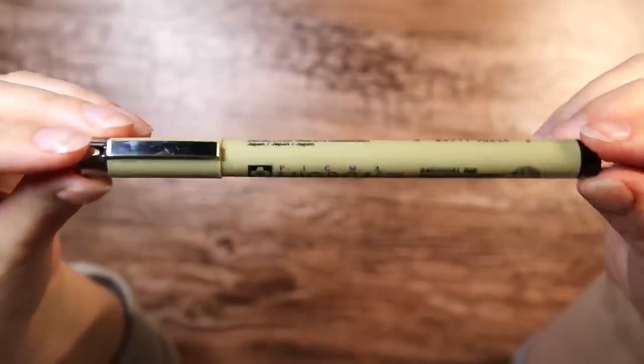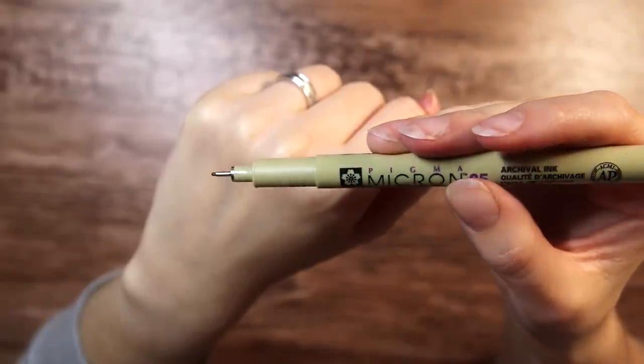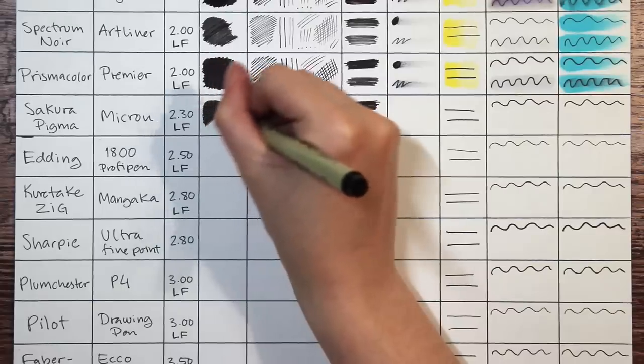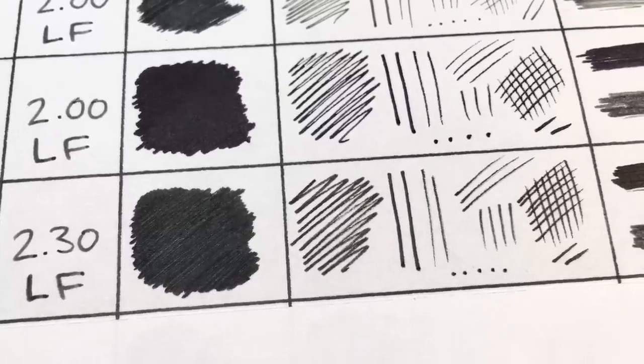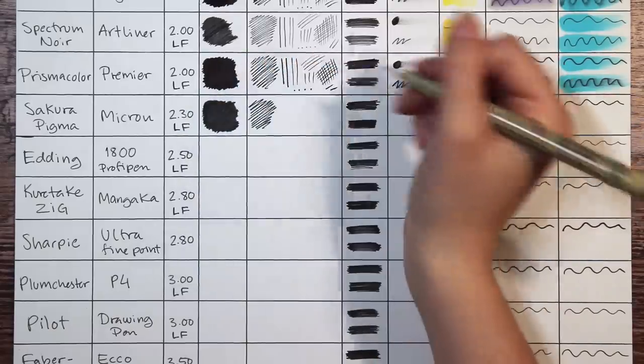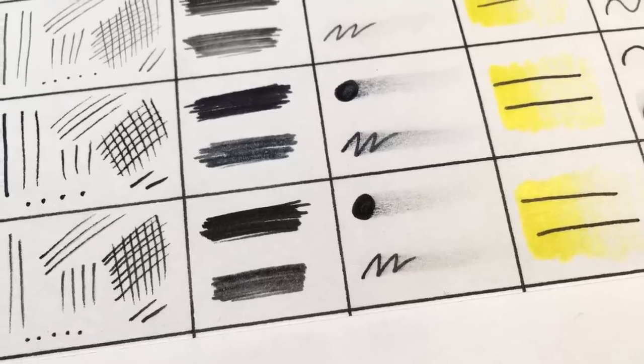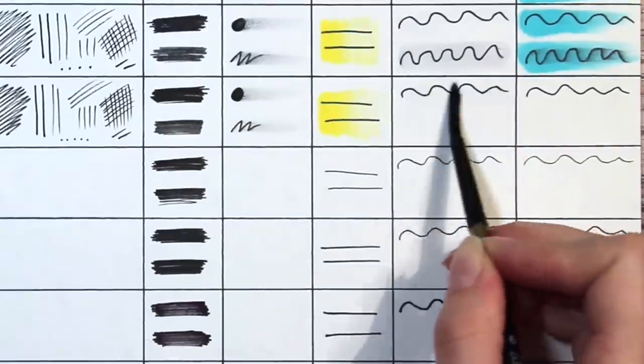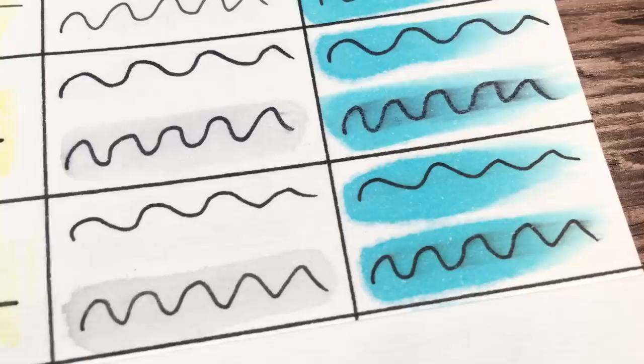And next we have many artists' favorite, the Sakura Pigma Micron for about $2.30 and it's lightfast. The ink looks very pigmented and solid with barely any pen strokes visible. This is actually one of the smoother pens I tested today. It didn't fade too much in the eraser test and it passes on both the water and the alcohol test. It almost passed on the fresh line water test too.